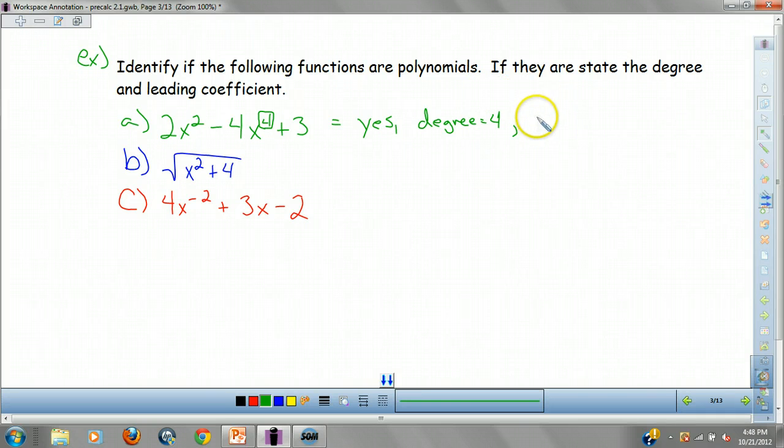Now, for my leading coefficient, I'm going to call it LC. By the way, if you didn't realize, examples are always noteworthy. LC is, well, we look at the one that's x to the fourth. The coefficient out in front is a four, or a negative four. So our leading coefficient is negative four. And that's all there is to it, guys. Find the x to the highest power as your degree. The number out in front is your leading coefficient.